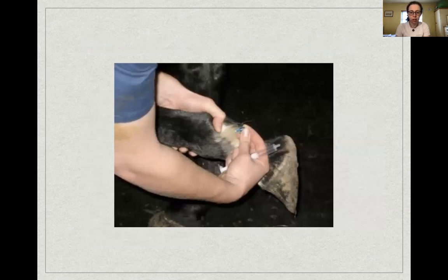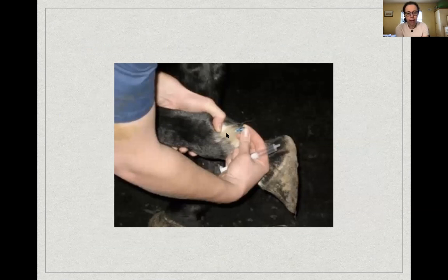Using your non-dominant hand, palpate the blood vessel and inject the needle subcutaneously on the palmar or plantar edge of that vessel over the nerve. Attach the syringe, draw back to confirm you're not in a blood vessel, then inject one to two mils of local anesthetic subcutaneously. Repeat on the opposite side. These are the two most commonly used nerve blocks in practice since so much lameness originates in the foot.